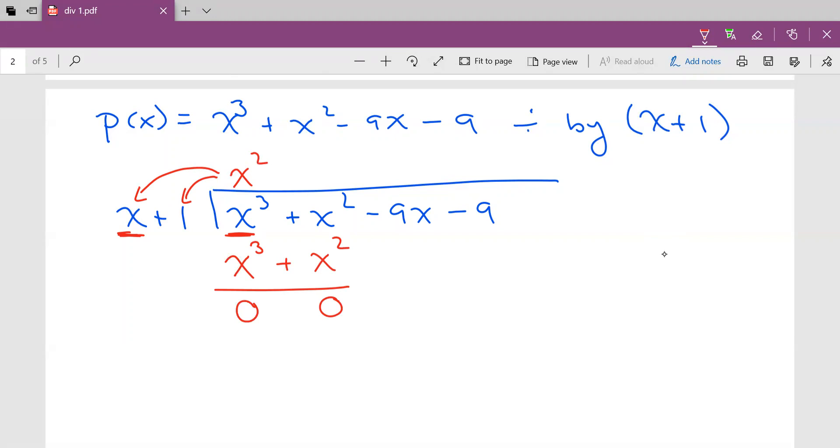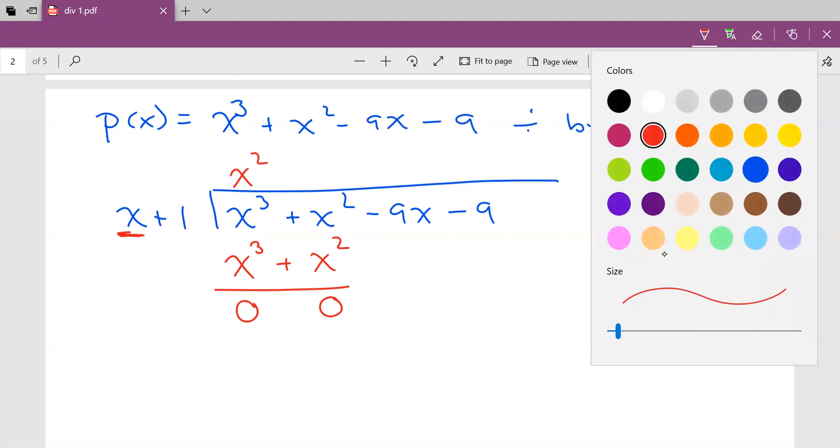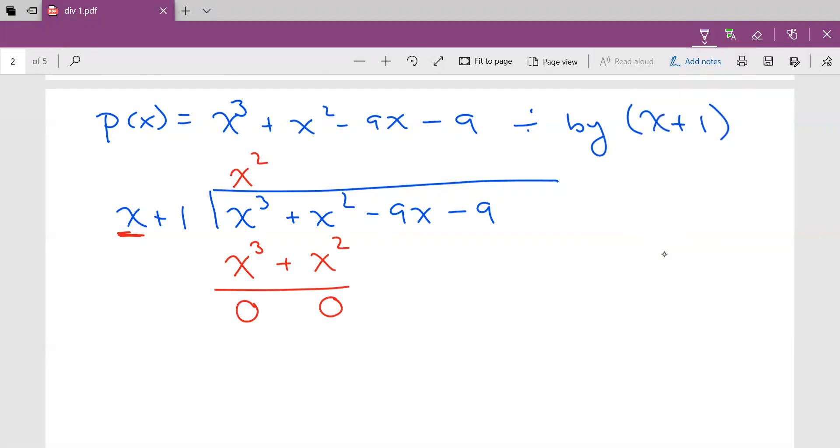Now that I have 0 for both of those, then if you remember what we did way back in elementary school, we would bring down our next term. So I'm going to bring down the -9x and the -9. So then I repeat my process over and over again. Remember, division is just an algorithm.